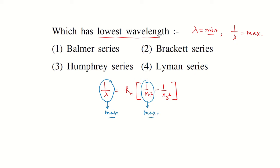That means that equals 1, and the value of 1 divided by n2 square must be minimum because the minus term is given. That means it equals 0.